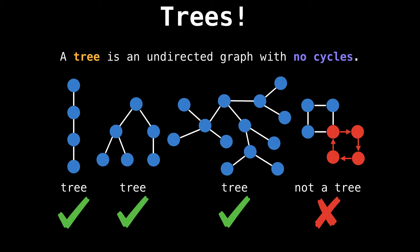That's because we define a tree as being an undirected graph with no cycles. And that's the key thing to remember: a tree cannot have cycles. You can see that the rightmost graph has a cycle and is therefore not a tree.